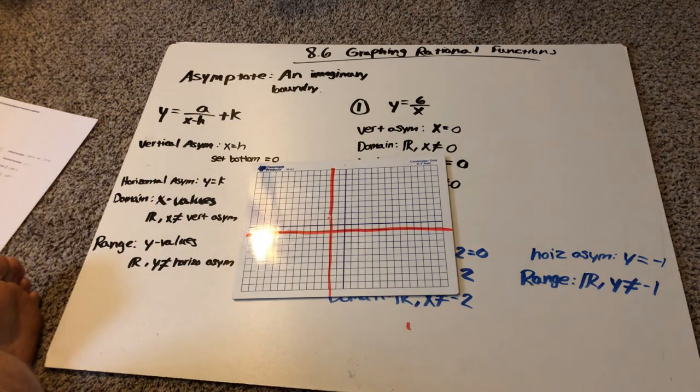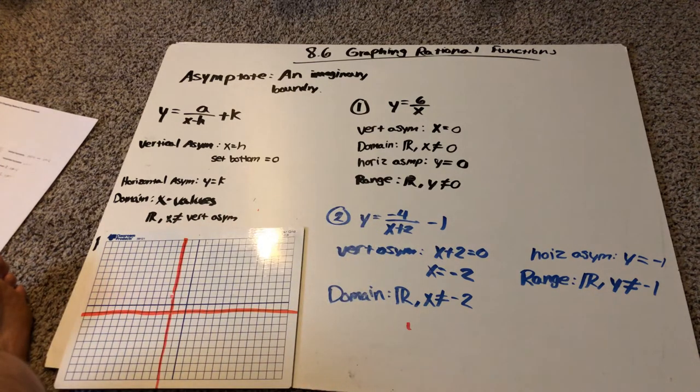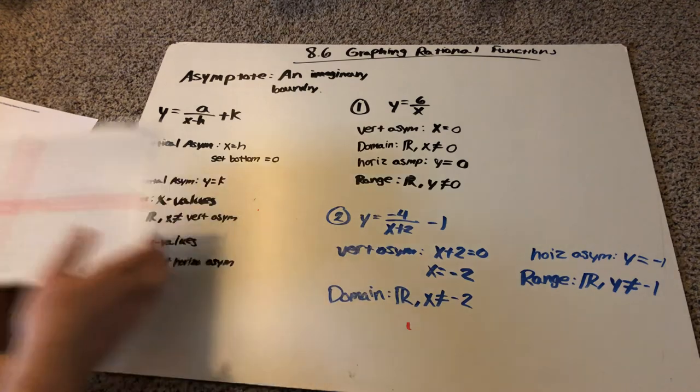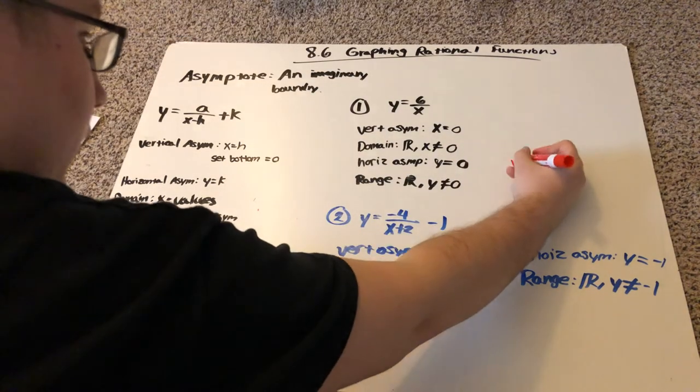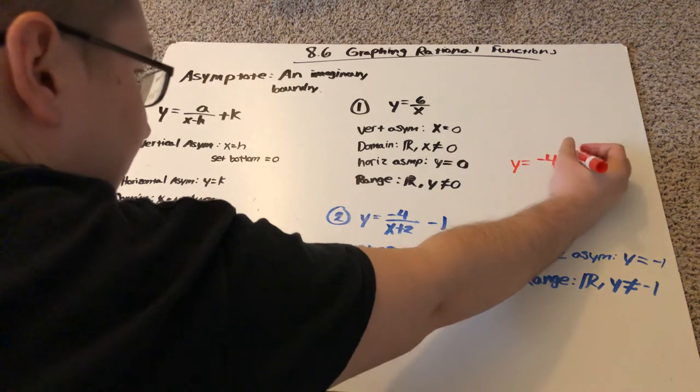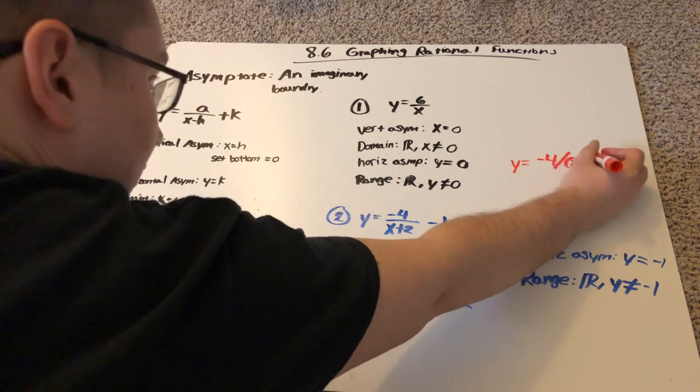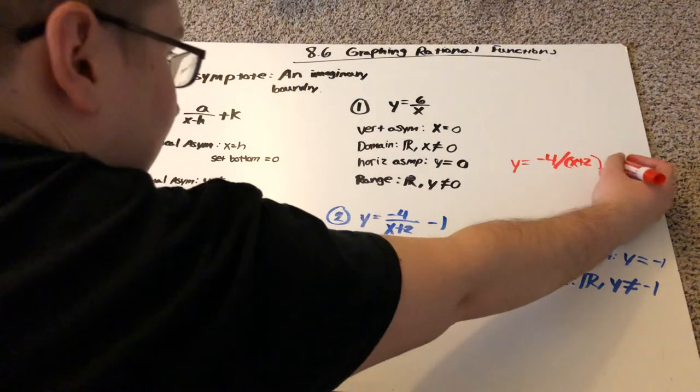So you can plug in numbers into this formula or what you can do is be careful and go into your calculator. Go into your y equals and you can plug this in. But be careful. When you put this in your calculator, it's going to look something like this. It's going to be y equals negative four divided by parenthesis x plus two. Make sure you put that bottom in parenthesis. And then minus one.